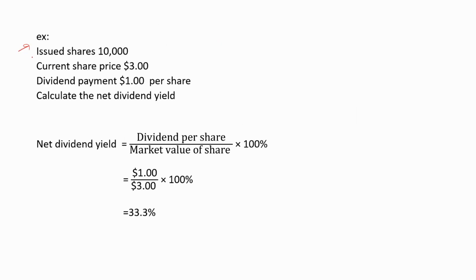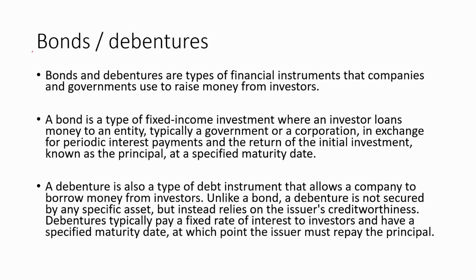Let's do another example. Issued shares: 10,000. Current share price: $3. Dividend payment: $1 per share. Calculate the net dividend yield. The net dividend yield equals dividend per share divided by market value of share, multiplied by 100. So: $1 divided by $3, multiplied by 100 equals 33.3%. Now let's talk about bonds and debentures — these are also a form of financial instruments and can be traded on an exchange.